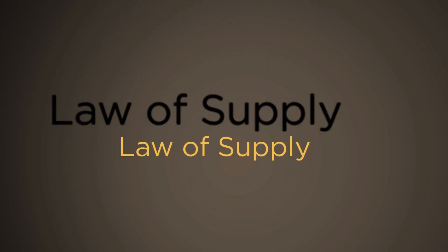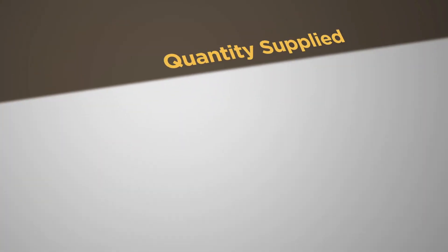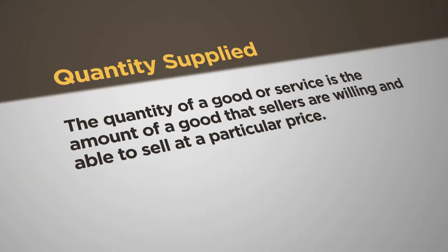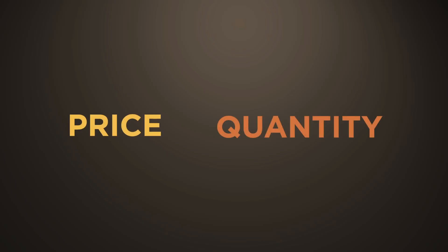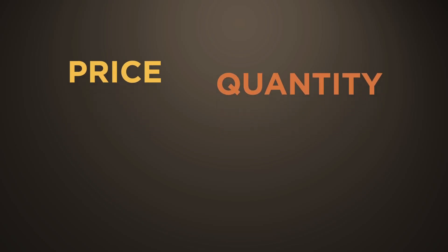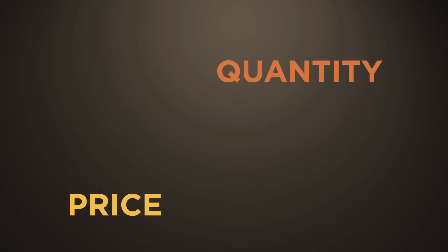Law of Supply. Now we need to look at the other side of the market and examine the sellers or producers. The quantity supplied of any good or service is the amount that sellers are willing and able to sell at a particular price. Many factors affect supply, but only price can determine the quantity supplied. When the price of a good rises, the quantity supplied increases. The reverse is also true. If the price decreases, the quantity supplied decreases.